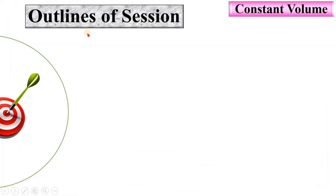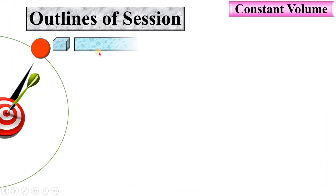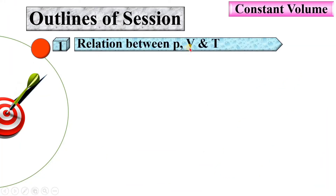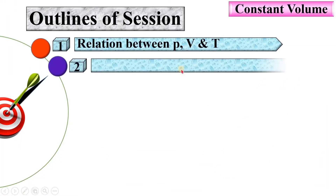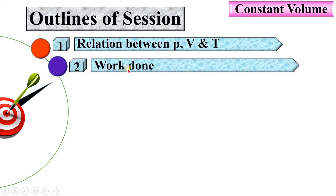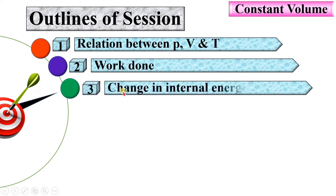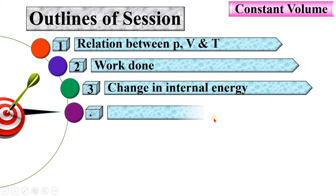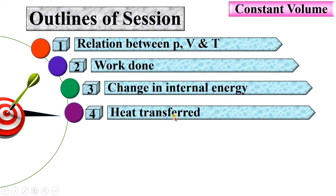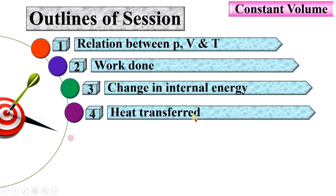Let us see the outlines of the session: the relation between pressure, volume and temperature; then work done during the constant volume process; then change in internal energy; then heat transfer; and finally change in enthalpy during the constant volume process.